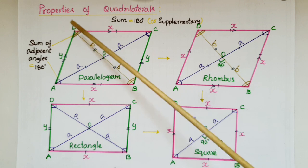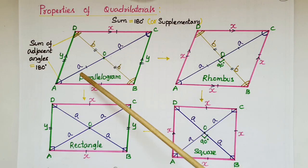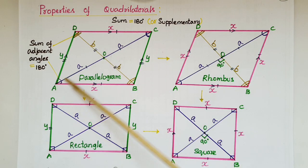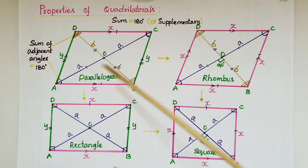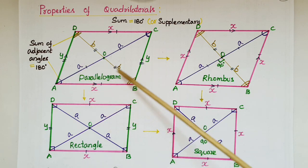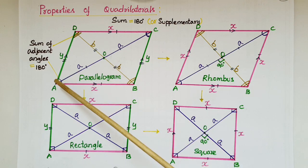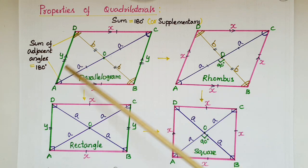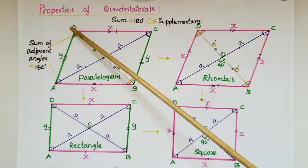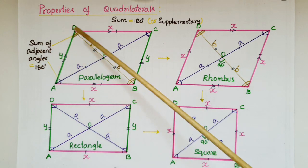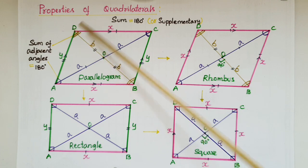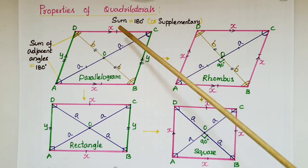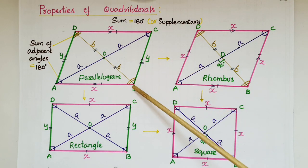Adjacent angle sum is 180 degrees, or supplementary. So angle A plus angle B is 180, angle A plus angle D is 180, angle D plus angle C is 180, and angle B plus angle C is 180.